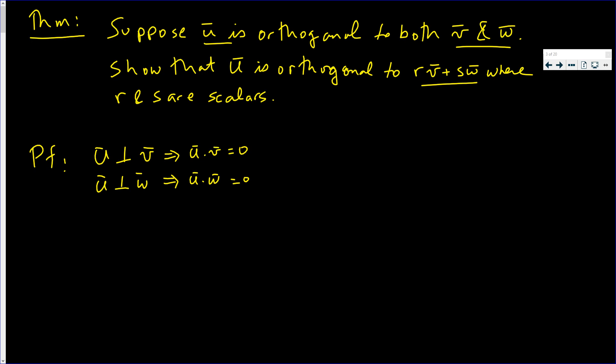Now we need to show that u is orthogonal to rv + sw, which is a single vector. That would imply that u·(rv + sw) = 0. We need to show that.